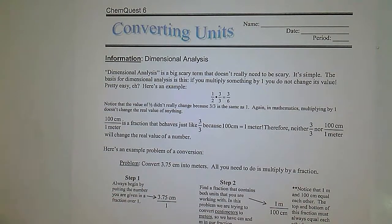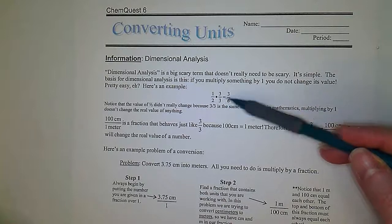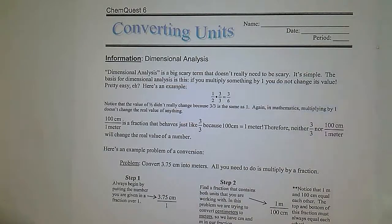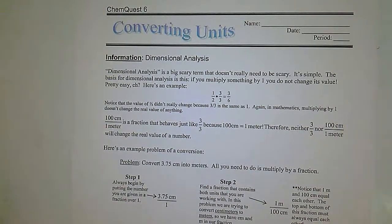Here's an example. One half times 3 over 3 equals 3/6. Notice that the value one half didn't really change because 3 over 3 is the same as 1 over 1 — the same as 1. In mathematics, multiplying by 1 doesn't change the real value of anything.